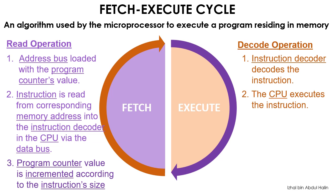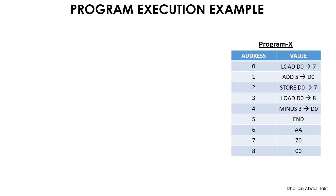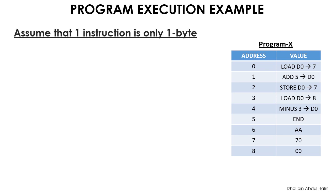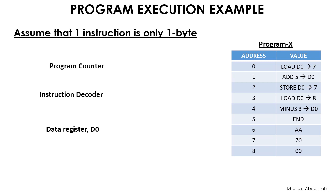Let's look at an example. We are going to execute a six-line program stored in memory as shown in the table on the right. The program is stored in addresses 0 to 5. Addresses 6 to 8 just contain data presented in hexadecimal values. For simplicity, we will assume that one instruction is only one byte in size, thus requiring only one address to store. Note that real instructions are actually bigger than one byte. We are now showing labels for the program counter, instruction decoder and data register d0, because all of these registers are related to the fetch-execute cycle in this example.